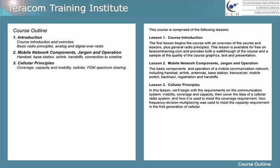Lesson three is cellular principles. In this lesson, we'll begin with the requirements on the communication system — mobility, coverage, and capacity — then cover the idea of a cellular radio system and how it's used to meet the coverage requirement, and how frequency division multiplexing was used to meet the capacity requirement in the first generation of cellular.